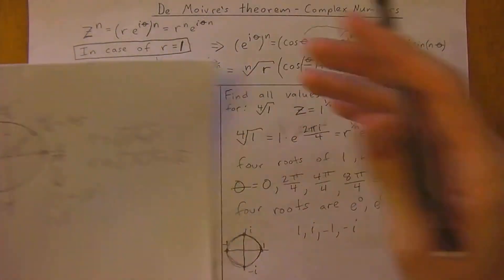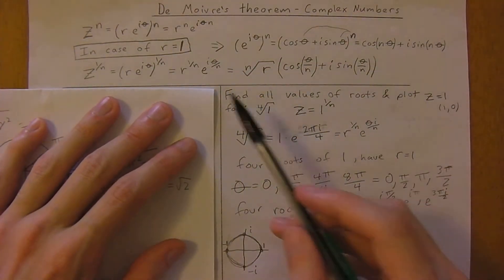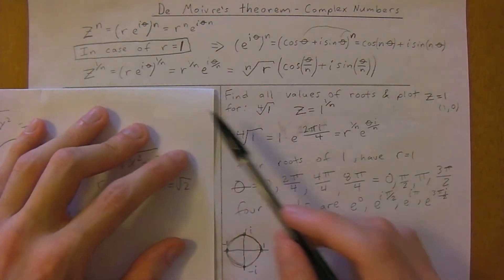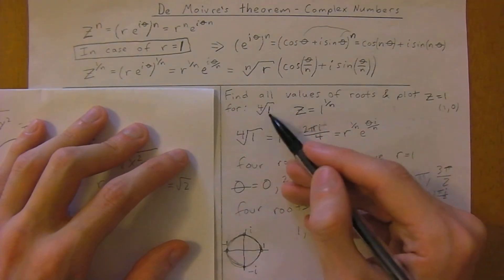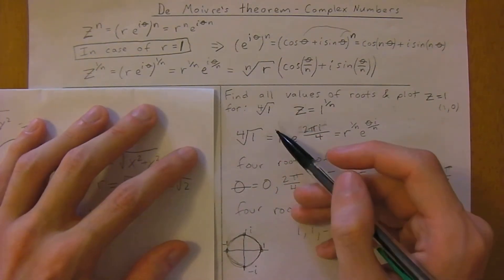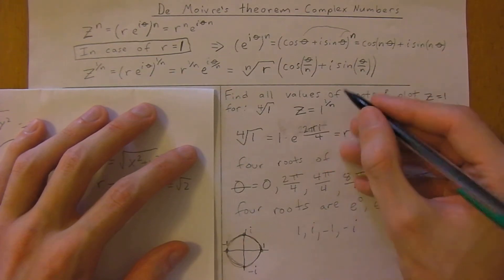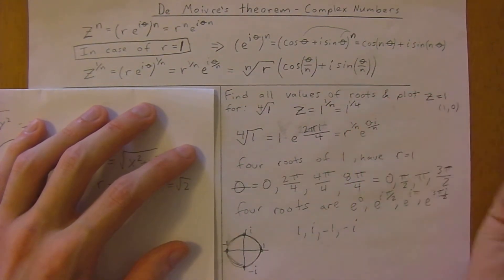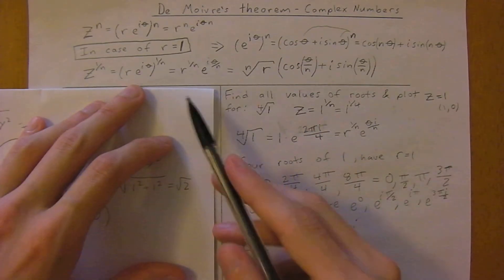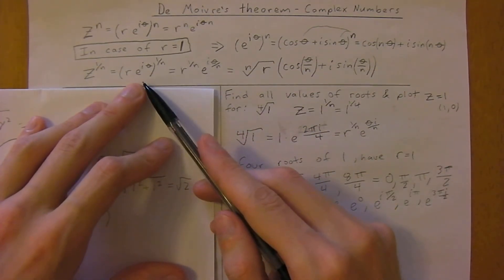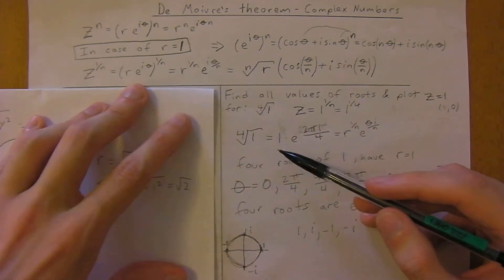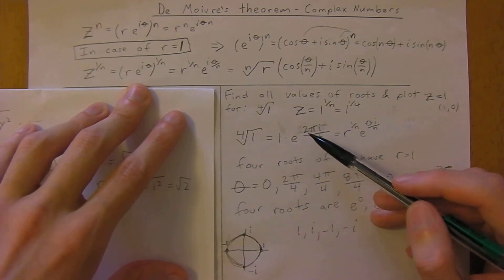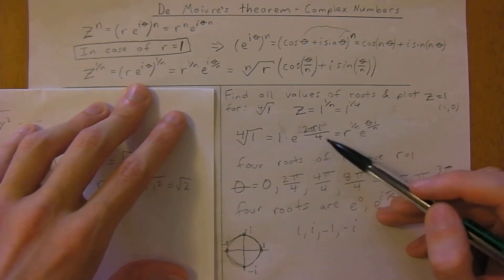Now let's do another quick example working with roots, 1 over n. In this example, we have the fourth root of 1, so we can represent this as 1 to the 1 over 4. Working with this equation, we have our radius which is 1.